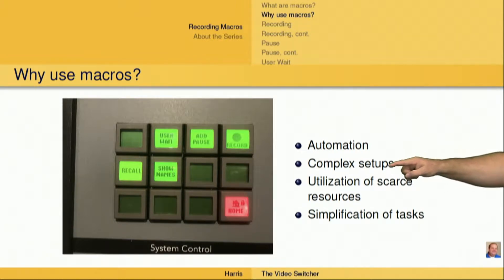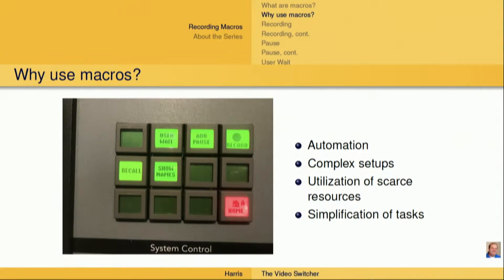That brings us to our second reason why we might want to use macros, and that's to have complex setups. We may have a chroma key setup, we may have a luma key setup, we may have something on effects one and effects two, and then we want to use effects one for something else. It would take us a long time to set up those complex things. Well, we can set them up in macros, push one button, the switcher makes the change, and we now have multiple setups without having to perform these tasks in a very complex way.